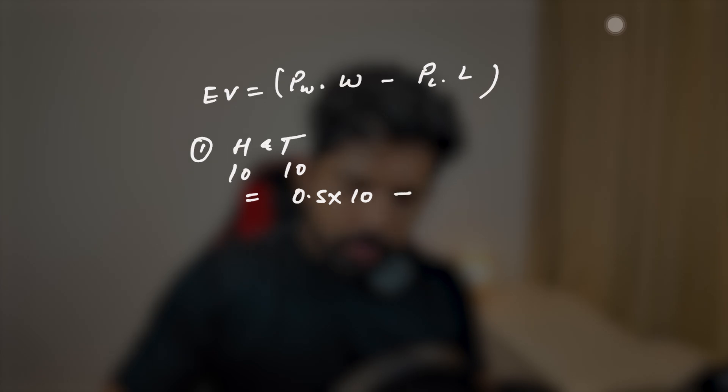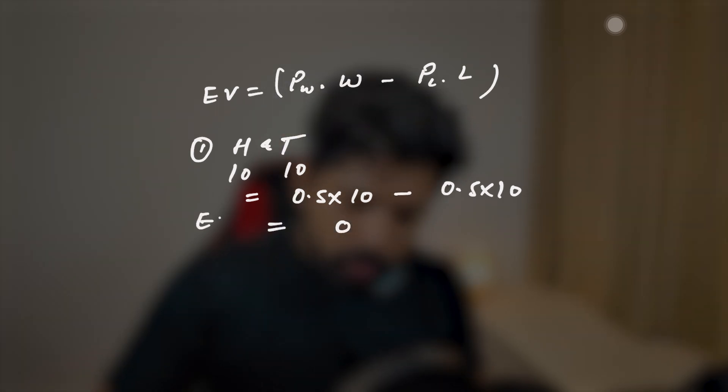Let's look at a few examples of expected value. The formula for expected value is: probability of winning multiplied by the amount of win, minus probability of losing multiplied by the amount you will lose. For example, you have a coin. When you toss it, there are two possible outcomes: heads or tails. If you win, you get $10; if you lose, you pay $10, and the probability is 50%. Plugging in the values: 0.5 × 10 − 0.5 × 10 = 0. So the expected value is zero — there is no edge for either the buyer or the seller.